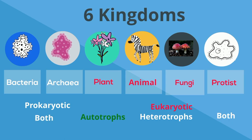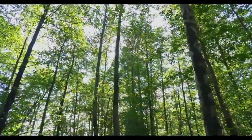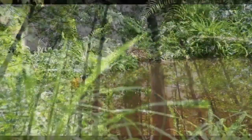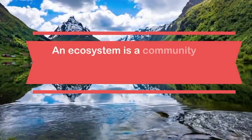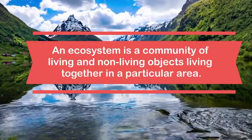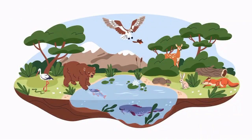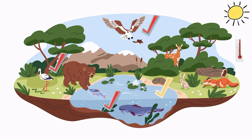Bacteria and protists have both autotrophic and heterotrophic organisms. This forest, this pond, and even this rotting log can all be considered ecosystems. An ecosystem is a community of living and non-living objects living together in a particular area. In this ecosystem, you have biotic factors, which include the hawk, the bear, the fish, and all other living organisms, along with abiotic factors such as the water, the amount of sunlight, and the temperature. All of these factors interact in order to make a community.